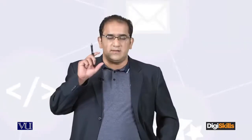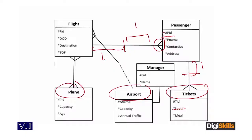Here is an important point about meal order and seat number. Seat number is not an entity — it is an attribute of the ticket entity. Likewise, meal is not an entity in this scenario; it is also an attribute. So ticket has seat number and meal as its attributes.